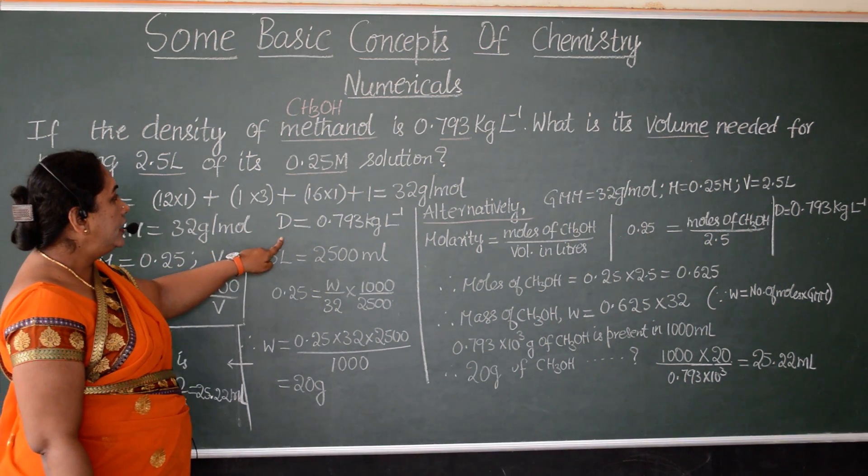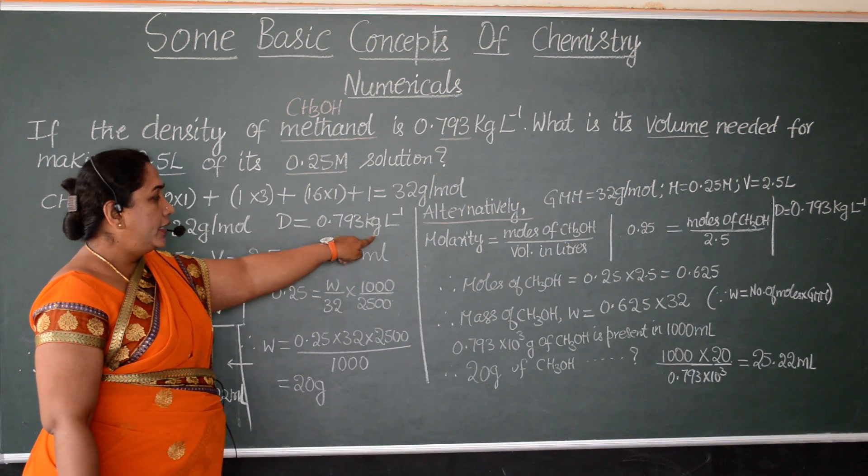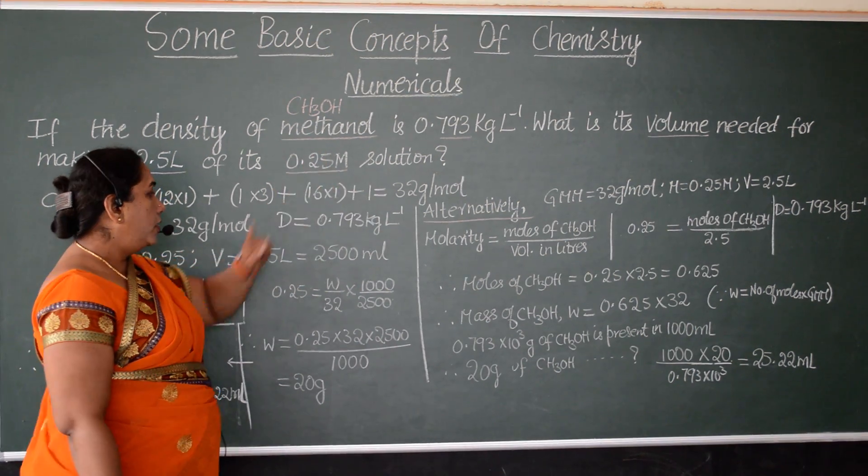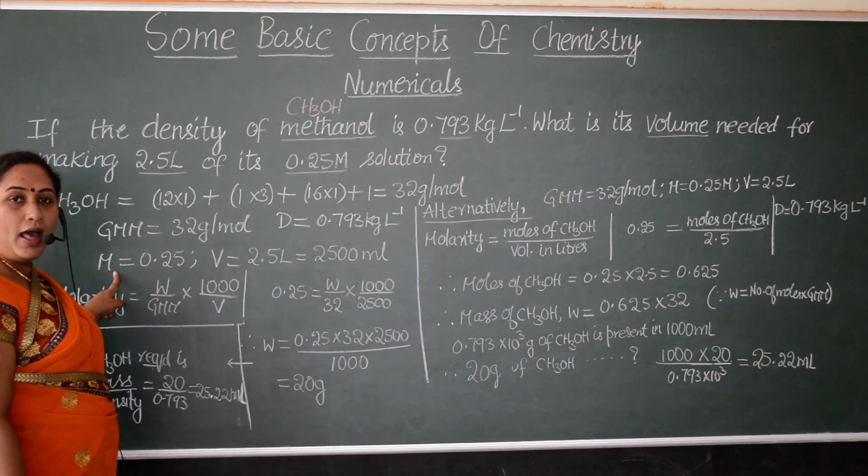Then, what is the density that is given to us? 0.793 kg per liter. That is the value given to us. And, what is the concentration? That is the molarity, 0.25 molar.